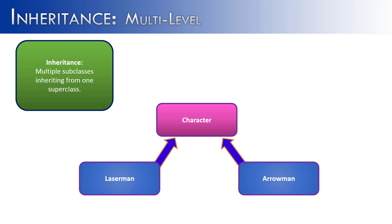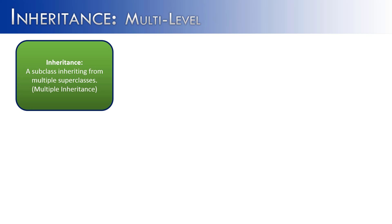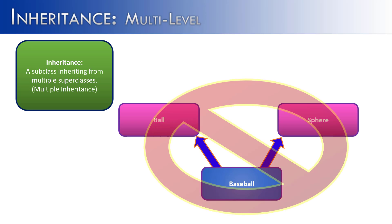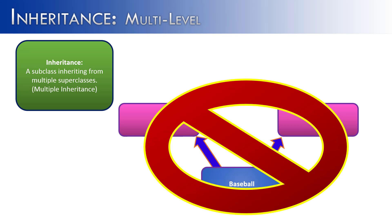Another way you might think we could structure inheritance is to do the opposite: instead of having two subclasses inheriting from a superclass, we could try to have one subclass inheriting from two superclasses. Unfortunately, this does not work. This is called multiple inheritance, and it does not work inside of Java. There's something else in Java called interfaces, but in terms of inheritance, this simply does not work.